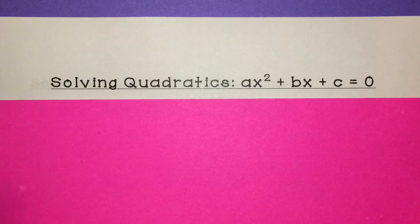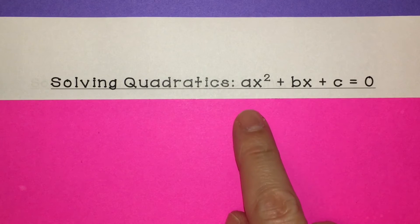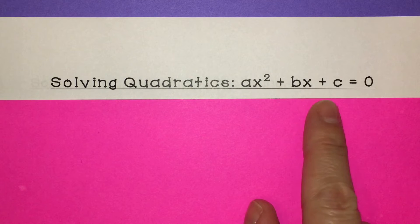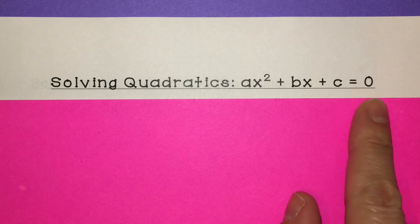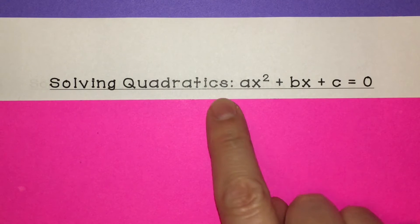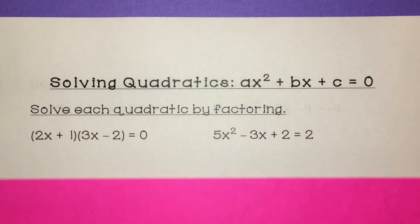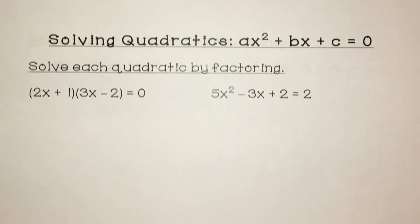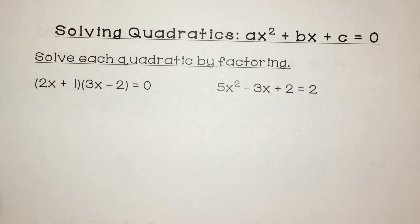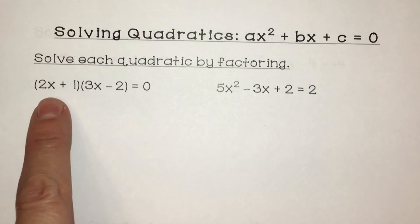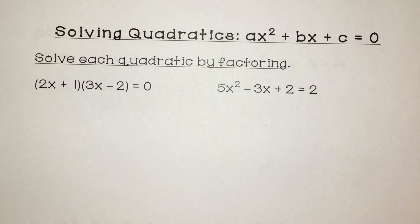This video is on solving quadratics that are in the form ax squared plus bx plus c equals zero. So in this form, there's a number that's multiplied by the x squared value. The first one we're going to solve is fairly simple — it's already factored — but you're going to solve each quadratic by factoring.